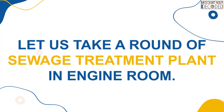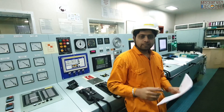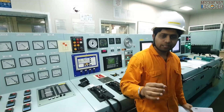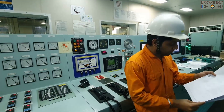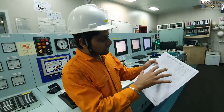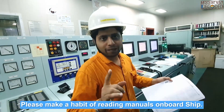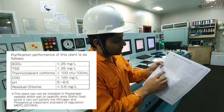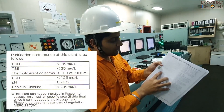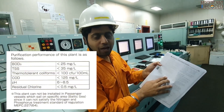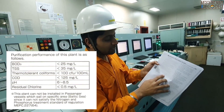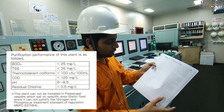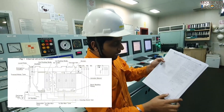Let us take a round of the sewage treatment plant in the engine room. It says less than 35 mg per litre. This is COD, this is pH, this is residual fluorine, this is polyforms. This is the diagram that we have shown over here.